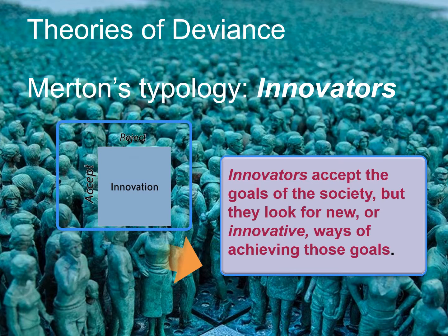Innovators accept the goals of society but look for new or innovative ways of achieving those goals. These are people who want all the same things as conformists — a fancy house, nice car, designer clothes — but they aren't interested in going to college and working their way up through a company. Examples include someone like Bill Gates, who dropped out of college, but also people like drug dealers and pimps. They've all found different ways of achieving the culturally accepted goals.